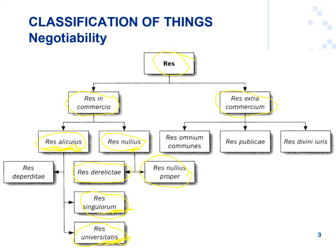This is the res in commercium category for the classification of things — things that are in commerce and the terms used to classify them. Let's move over to res extra commercium, which refers to things outside of commerce. A division is drawn between res omnium communis, res publici, and res divini iuris.